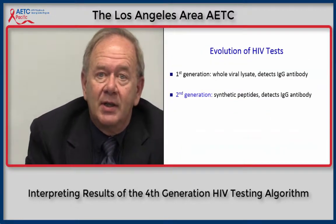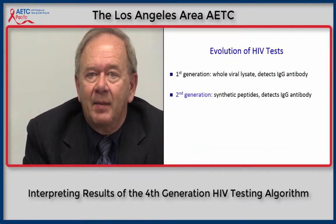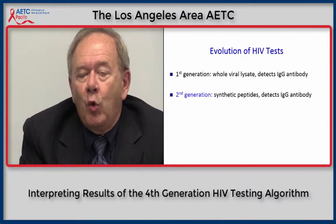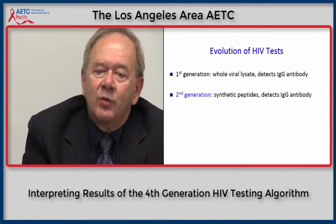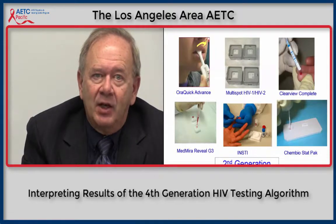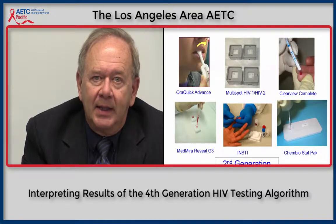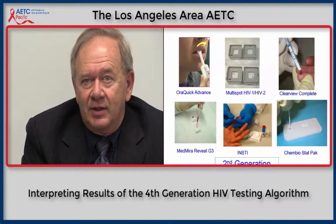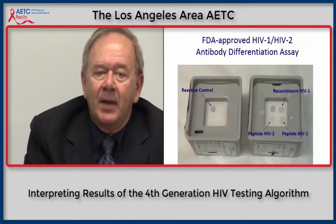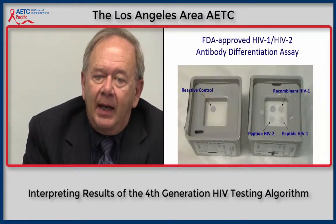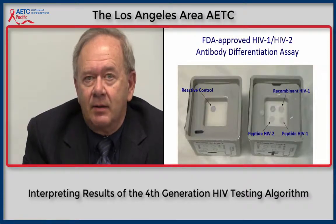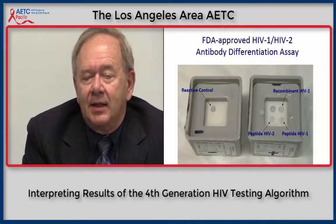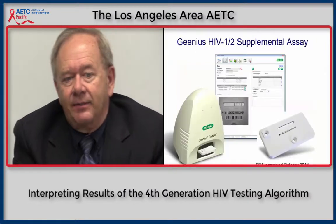Second-generation tests use a different antigen — synthetic peptides — but they also detect only IgG antibody. It's important to recognize that most of the rapid HIV tests currently available in the United States are second-generation tests that detect IgG antibodies. The FDA-approved HIV-1/HIV-2 antibody differentiation assay is also a second-generation test detecting only IgG antibodies.